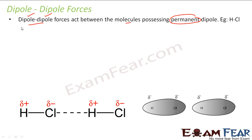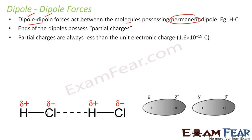It is called dipole-dipole because both the dipoles are permanent. One thing also to note is that this partial charge is always less than the unit electronic charge, which is nothing but 1.6 × 10⁻¹⁹ C. This partial charge is always less than that, and that's why we use a special symbol to denote it.